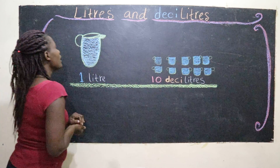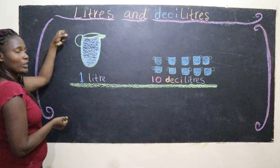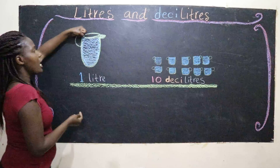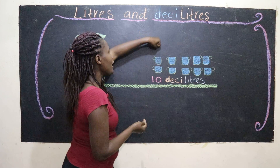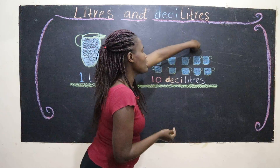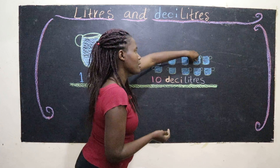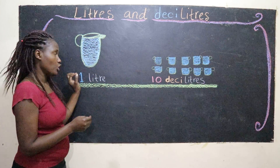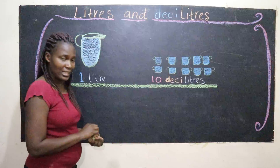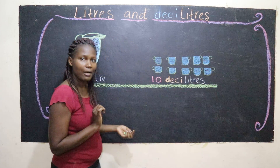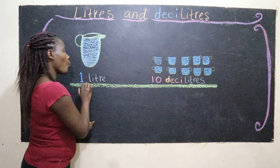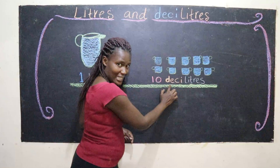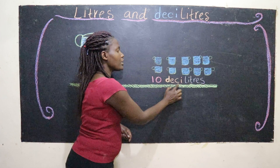Now if I hold this one-liter jug full of water and I take all that water and try to fill all these cups of the same size — these little cups — and by the time I have filled the last cup there is no more water left in the jug, then we can say that these 10 little cups have carried one liter of water.